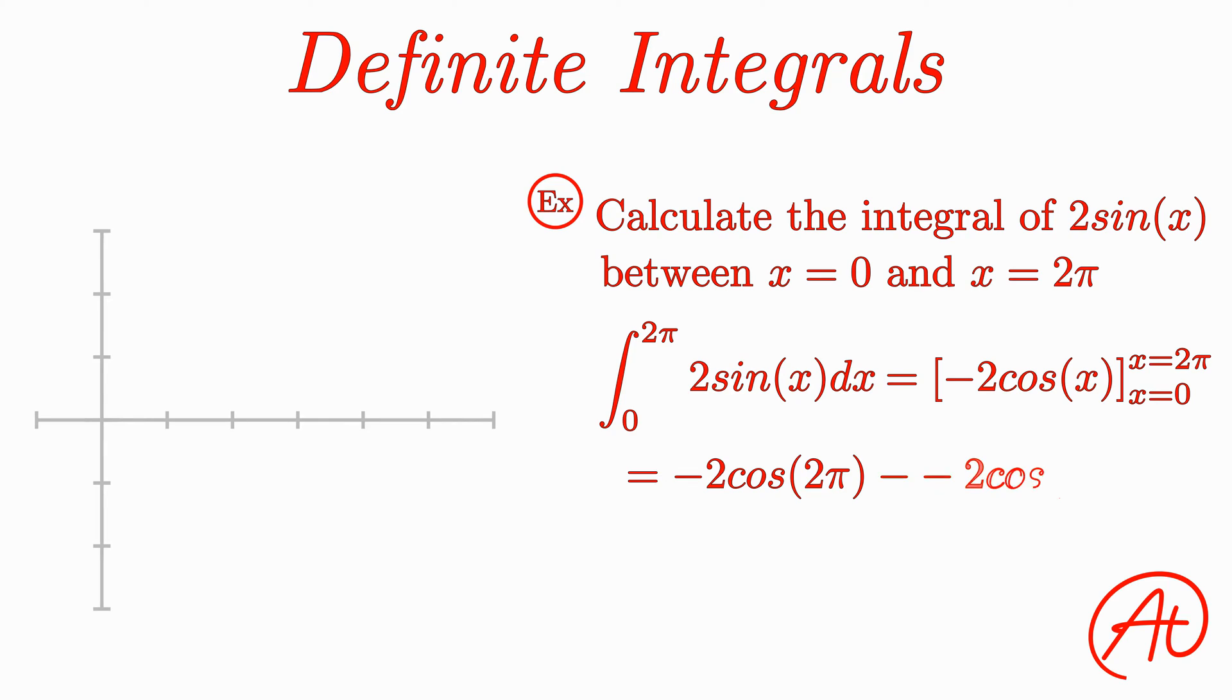this leaves us with -2cos(2π) minus -2cos(0), or -2cos(2π) + 2cos(0).